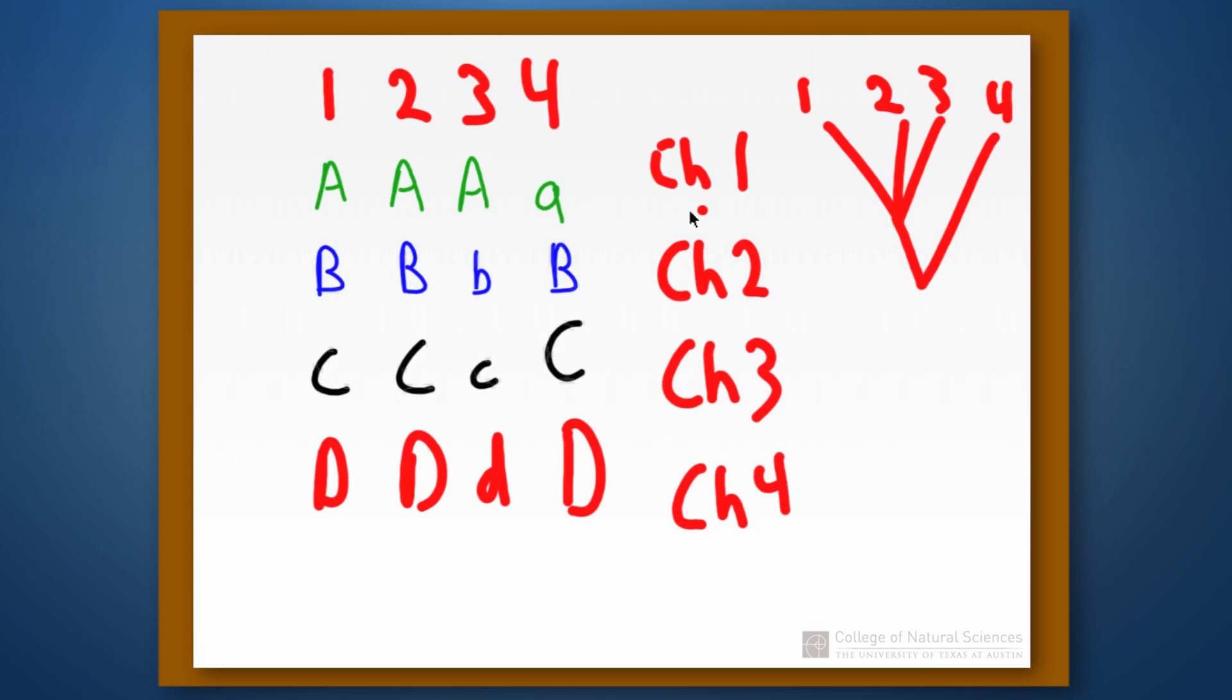And then for character two, though, it looks like one, two, and four should all be in a clade together. So for character number two, it looks like what we should do is the following.